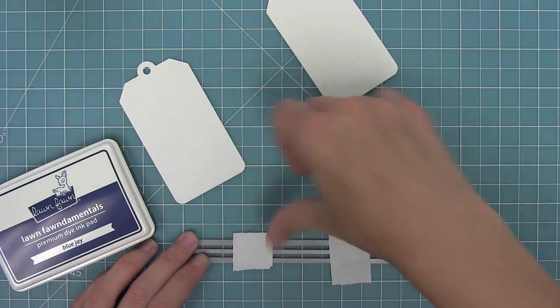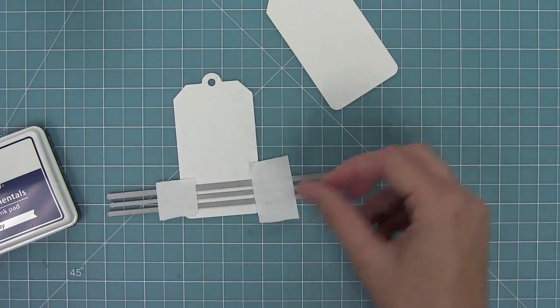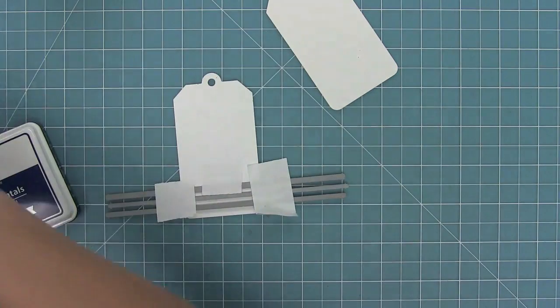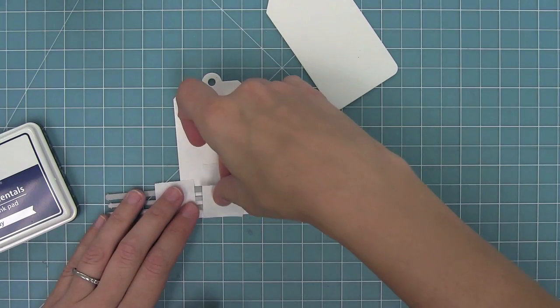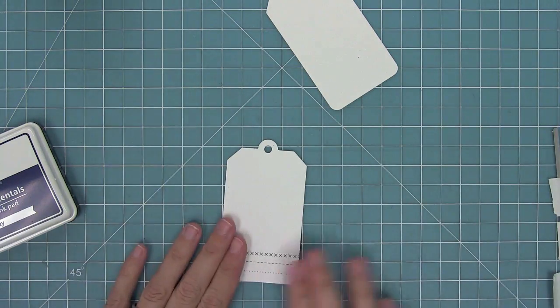So I've got two pieces of tape there and then I can take that whole piece, it's almost like it's one die now, and line it up on the bottom of my tag. And I will then run that through my die cut machine and have this beautiful stitch edge that is just gorgeous. I love these stitch borders, they're so fun.